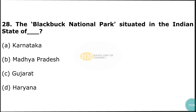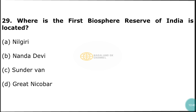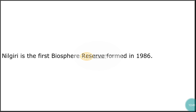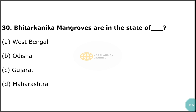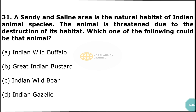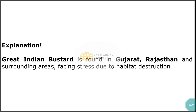Question number 28: The Blackbuck National Park is situated in the Indian state of? Correct answer option C — Gujarat. Question number 29: Where is the first biosphere reserve of India located? Correct answer option A — Nilgiri. Question number 30: Bhitarkanika Mangroves are in the state of? Correct answer option B — Odisha. Question number 31: A sandy and saline area is the natural habitat of an Indian animal species threatened due to the destruction of habitat. Which of the following could be that animal? Correct answer option B — Great Indian Bustard. Great Indian Bustard is found in Gujarat, Rajasthan, and surrounding areas, facing stress due to habitat destruction.